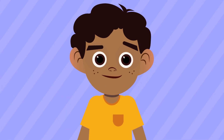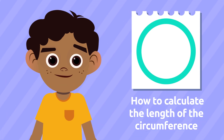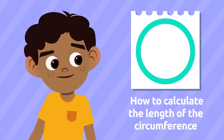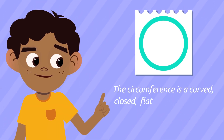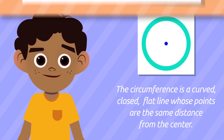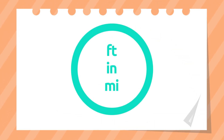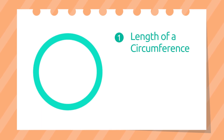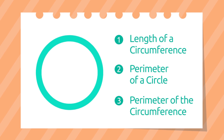Today we're going to tell you how to calculate the length of the circumference. The circumference is a curved closed flat line whose points are the same distance from the center. Because it's a line, its length is measured in feet, inches, or miles. The concept 'length of a circumference' can also be referred to as the perimeter of a circle or the perimeter of the circumference.